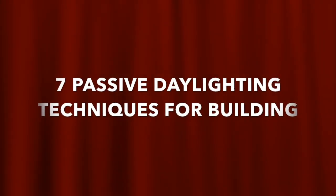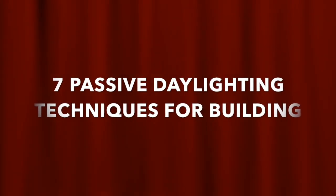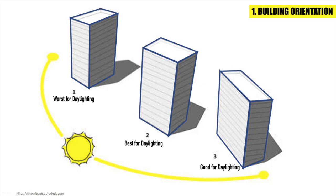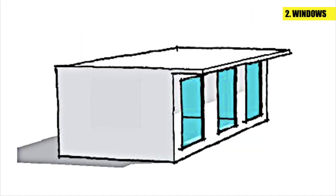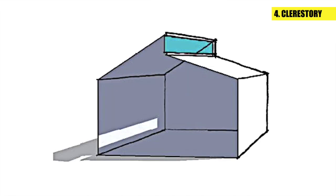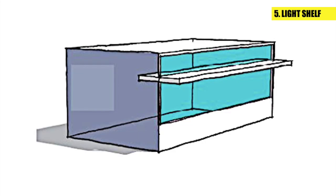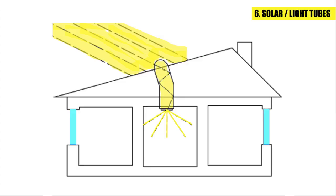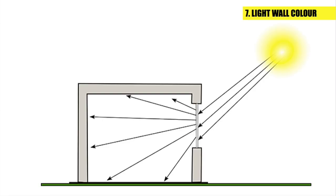Here comes the 7 passive daylighting techniques for a building: 1 building orientation, 2 windows, 3 skylight, 4 clerestories, 5 light shelves, 6 solar tubes, 7 light wall colors.